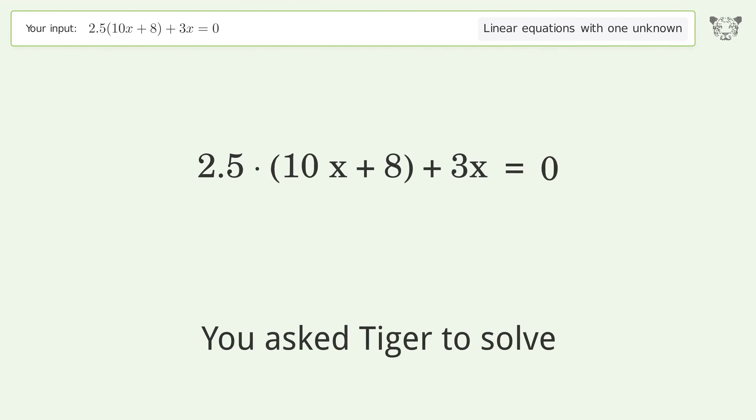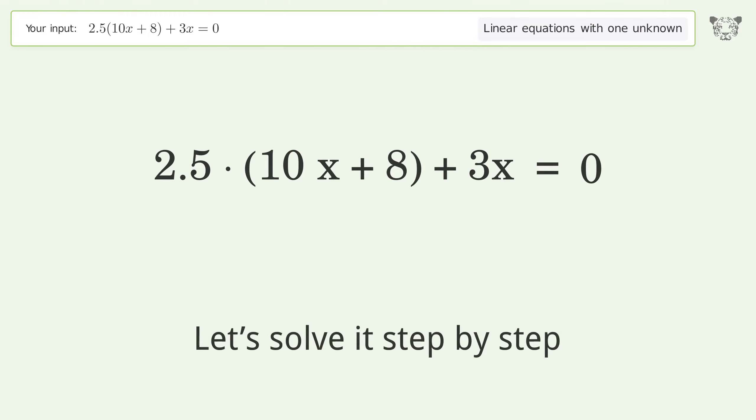You asked Tiger to solve this. This deals with linear equations with one unknown. The final result is x equals negative 5 over 7. Let's solve it step by step. Simplify the expression. Expand the parentheses.